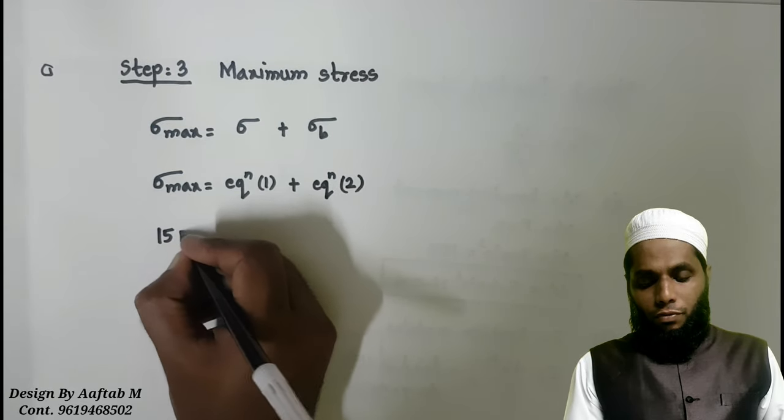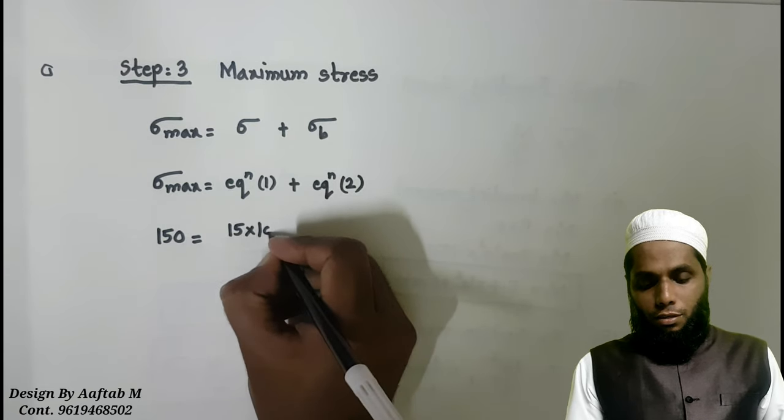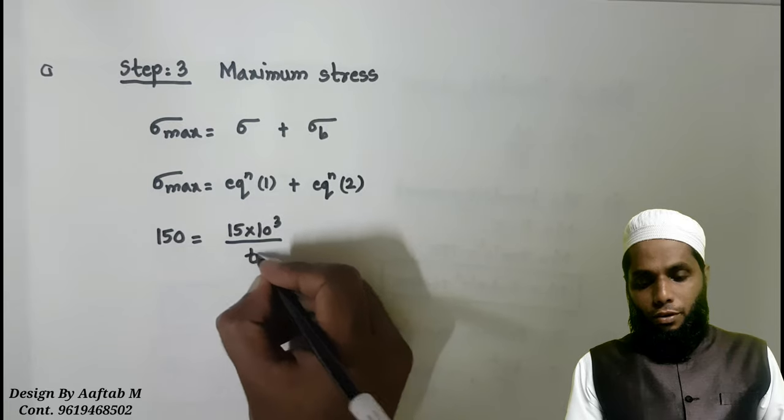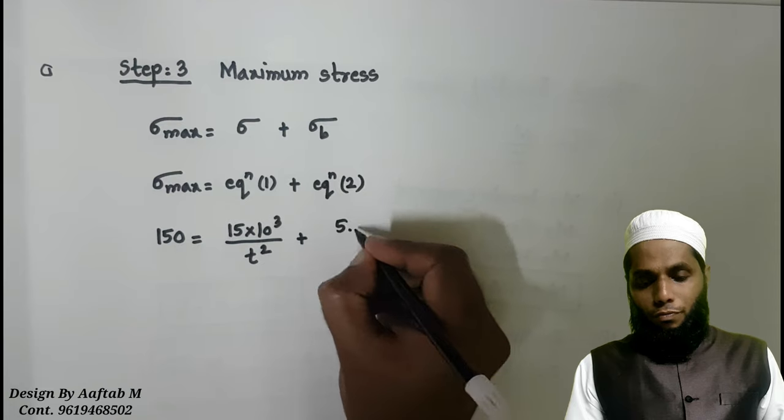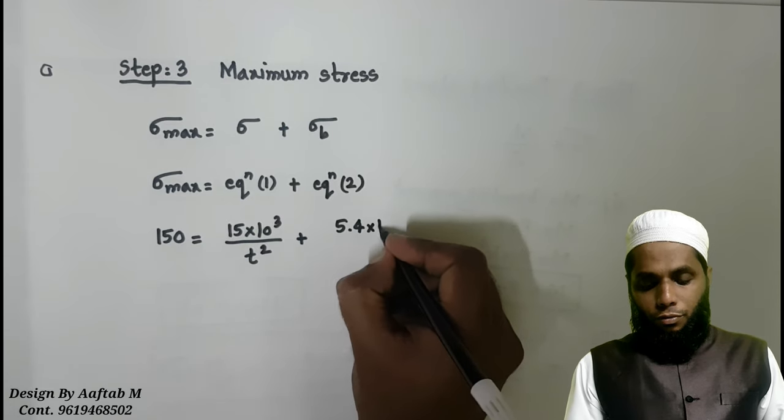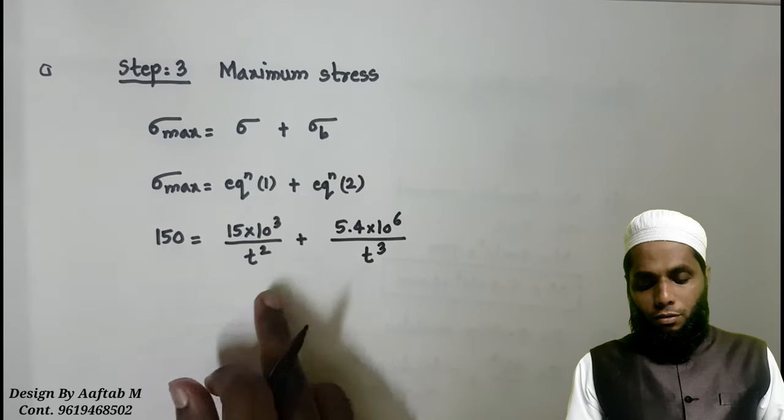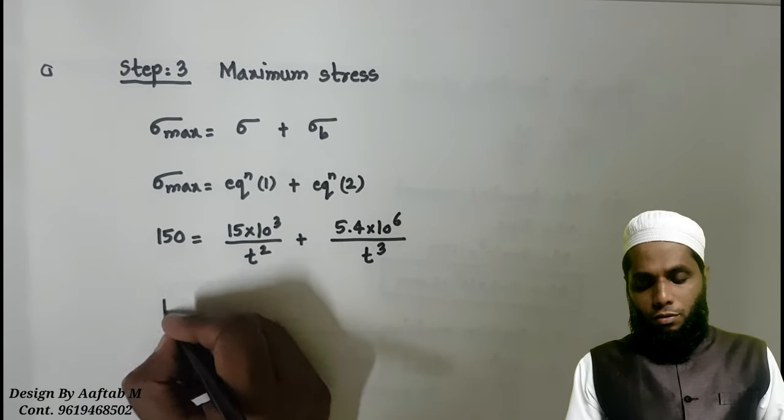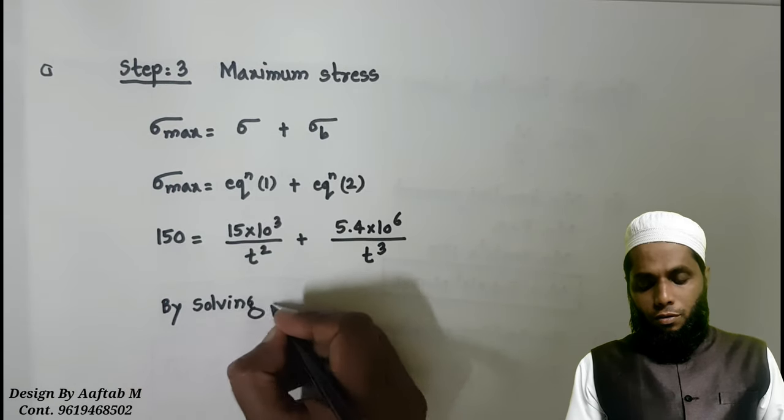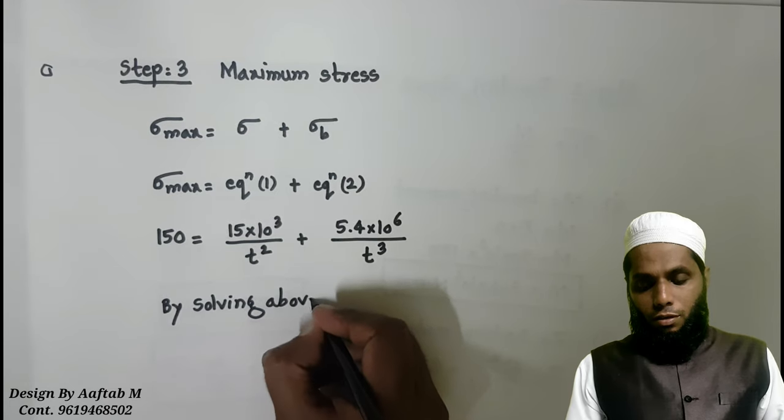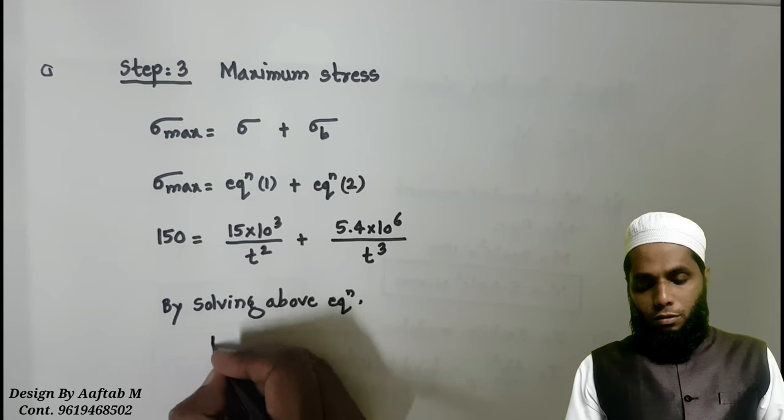In equation number 1, we have 15 into 10 raised to 3 divided by T square plus 5.4 into 10 raised to 6 upon T cube. Now we will solve this. Upon solving this equation, we found T to be 38.6.